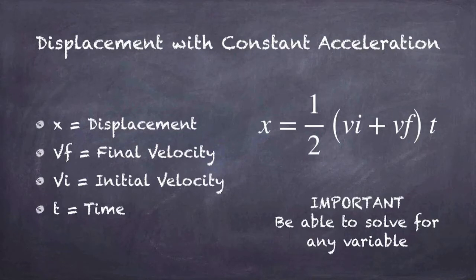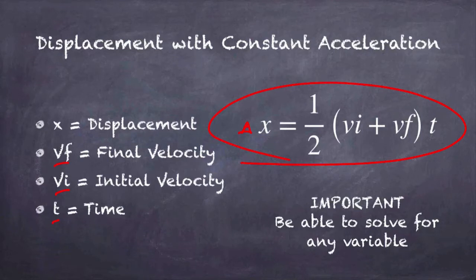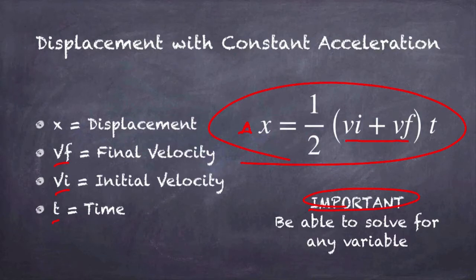In this equation, delta x is the displacement — how far the object has moved. V_f is the final velocity, V_i is the initial velocity, and t is time. Make sure you add up your velocities before multiplying. Importantly, you need to be able to solve for any variable — not just displacement, but also initial velocity, final velocity, or time using basic algebra.